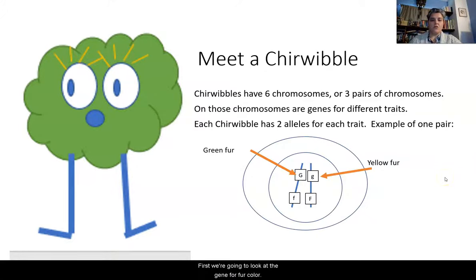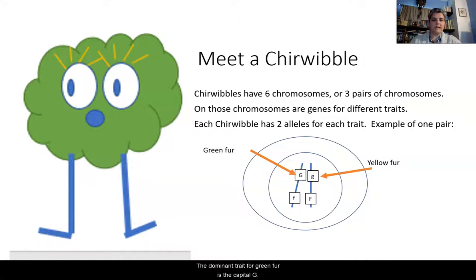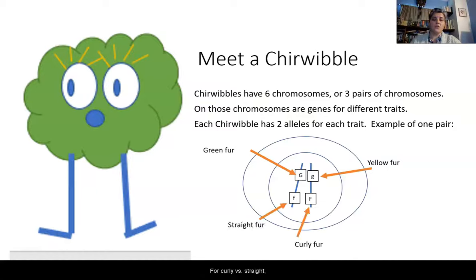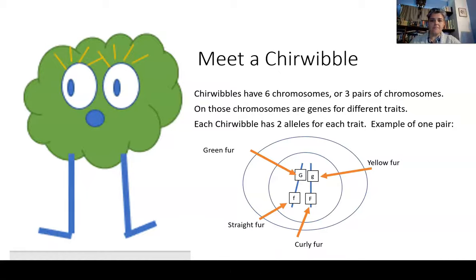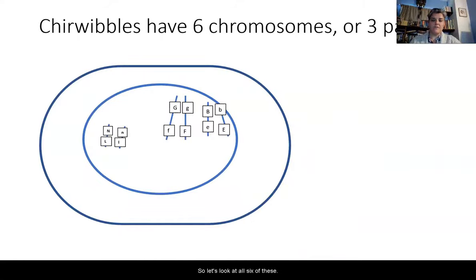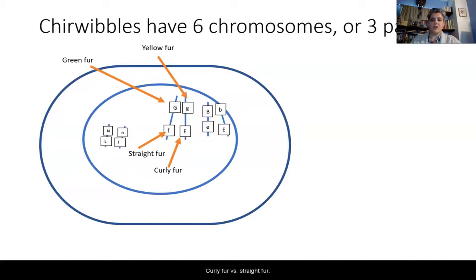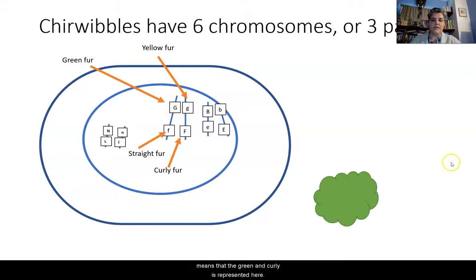First, we're going to look at the gene for fur color. The capital G represents the dominant trait, which is green fur. The lowercase g means yellow fur, so yellow is a recessive trait. For curly versus straight fur: curly fur is represented with a capital F, and lowercase f is for straight fur, which is the recessive trait. We've introduced the G and the F — green fur versus yellow fur, curly fur versus straight fur. In this particular case, we have the heterozygous allele — capital G, lowercase g — and since there's one dominant present, that means green and curly is represented.